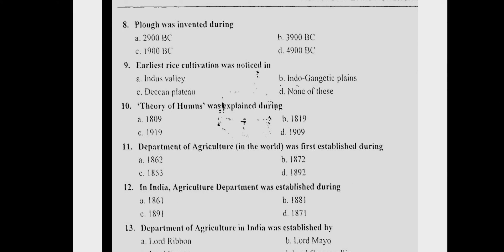Question 8: The plow was invented during Answer A, 2900 BC. Question 9: The earliest rice cultivation was noticed in Answer C, the Deccan Plateau. Question 10: The theory of humus was explained during Answer A, 1809. Question 11: The Department of Agriculture was first established during Answer A, 1862.